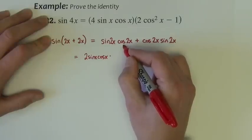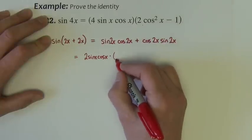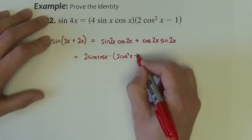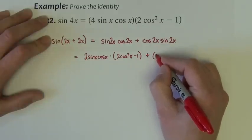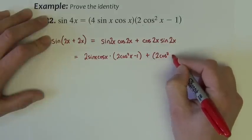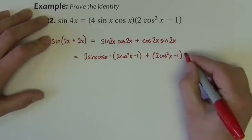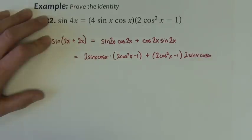Times cosine 2x, I'm going to use again the second of the options, I'm going to use this option, the one that looks like that. Cosine 2x is 2 cosine squared x minus 1. Cosine 2x here is another 2 cosine squared x minus 1, sine 2x is 2 sine x cosine x.